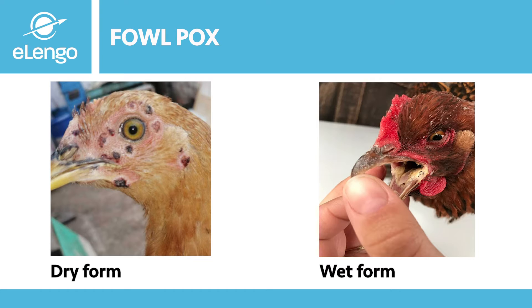The pox lesions will appear as small wart-like growths that appear on the unfeathered areas of the bird's body, like the face, the wattles, eyelids, and the feet. These small lesions will appear yellow at first in color and will gradually increase in size. The lesions will also change color as they grow larger, turning into a dark brown color, looking very rough and dry.